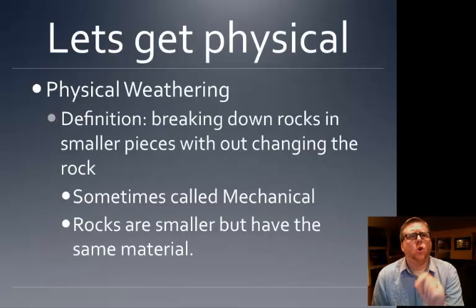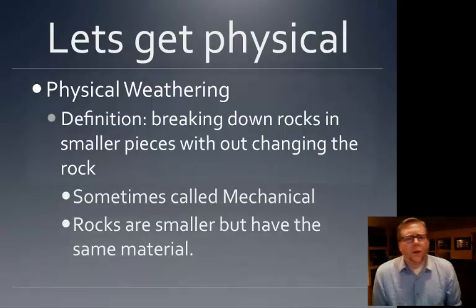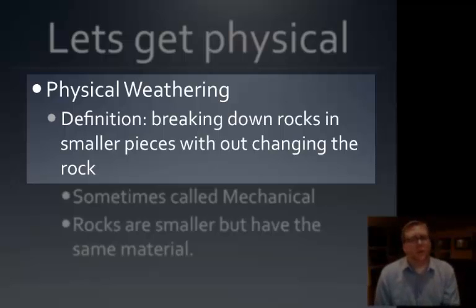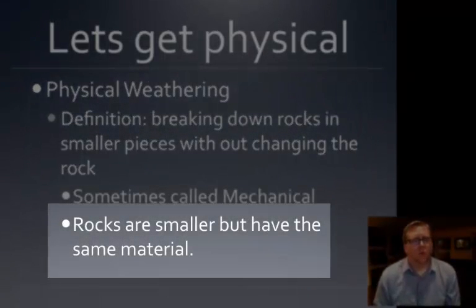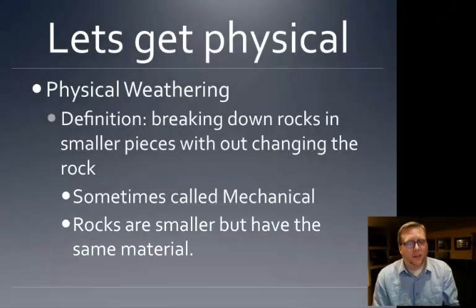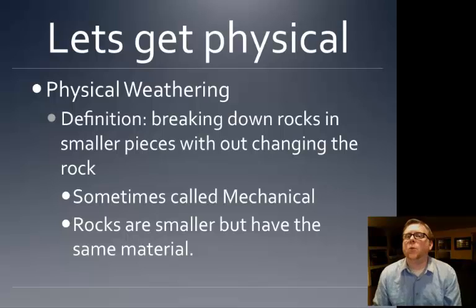Let's get physical. Physical weathering is, by definition, breaking down rocks into smaller pieces — but with one addition: without changing the rock. The rock is still the same rock, just smaller. So if you started with a giant piece of granite and put it through some weathering process, you'd come out with little pebbles of granite — it's still granite. You've just physically weathered it.